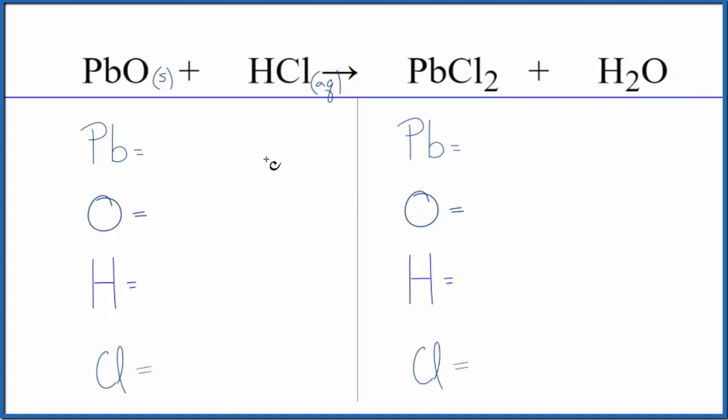So we have one lead atom, one oxygen, one hydrogen, and one chlorine. Product side we have one lead, we have one oxygen, two hydrogen atoms, and two chlorine atoms.